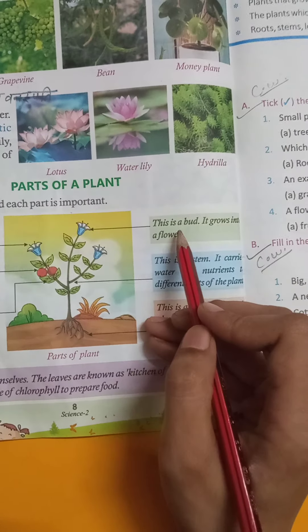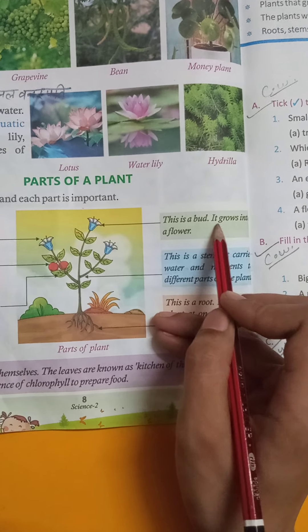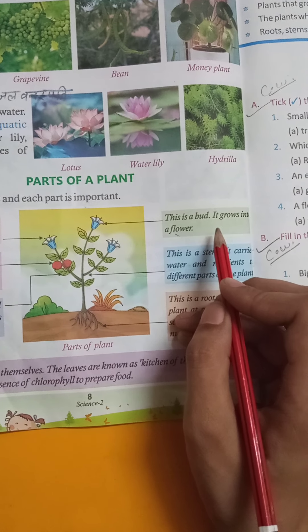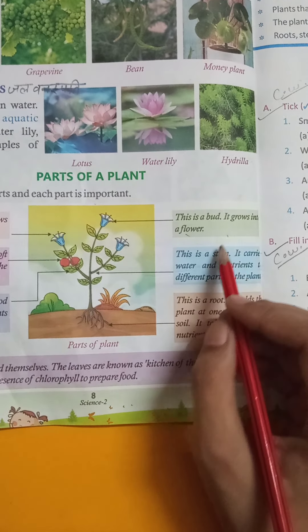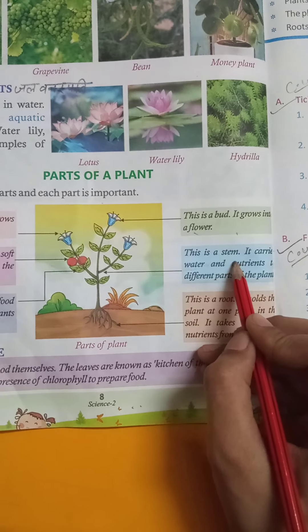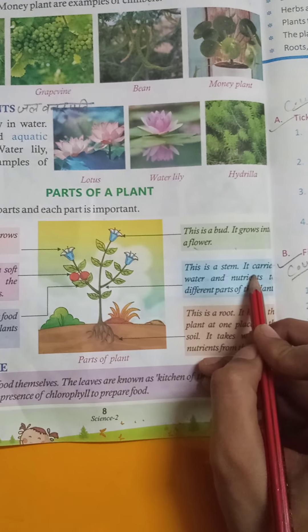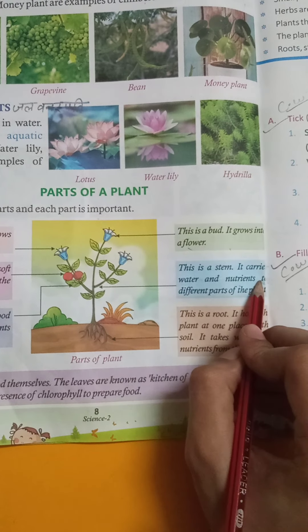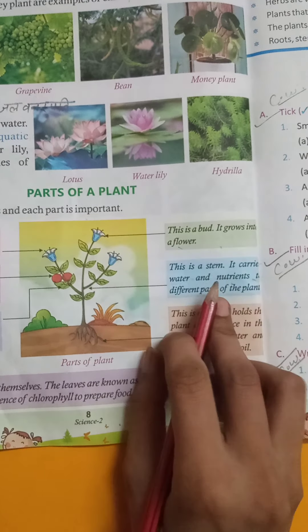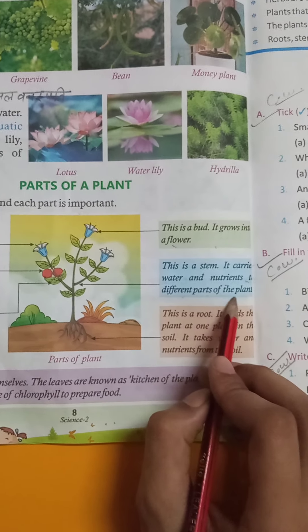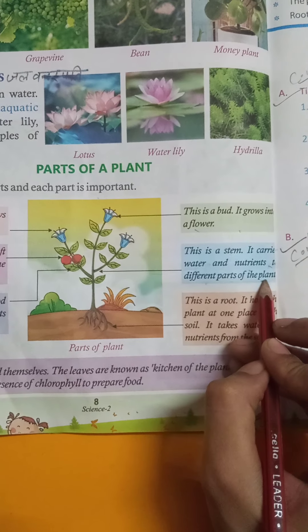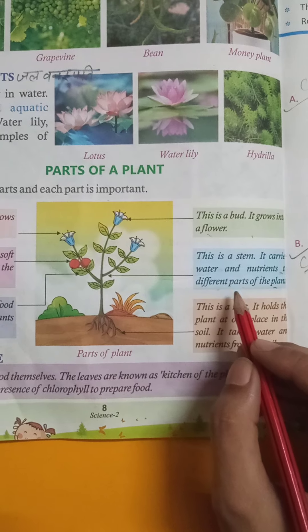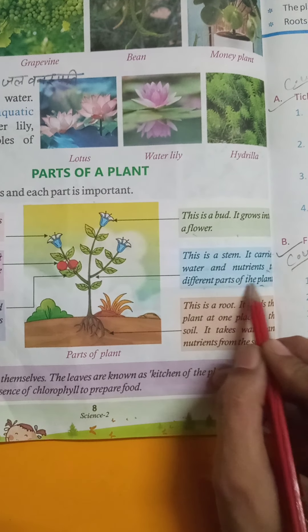This is a bud — it grows into a flower. This is a stem — it carries water and nutrition to different parts of the plant.